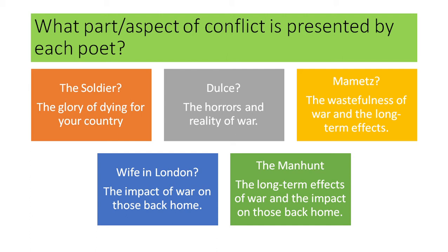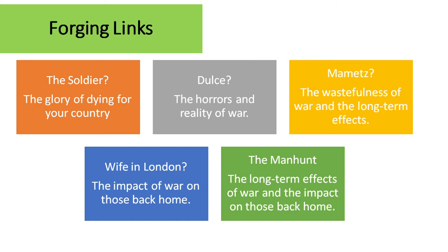What you should be starting to see already is that there are obvious similarities and differences here that we can compare as part of our comparison of meanings. So what I'd like you to do now is draw arrows between the similarities and differences — create a little key. I've done my similarities in red with red arrows, and my differences in purple with purple arrows. Pause the video and have a go. My first similarity is A Wife in London and The Manhunt — both focus on the impact of war on those back home, specifically the impact on wives dealing with the aftermath of war.